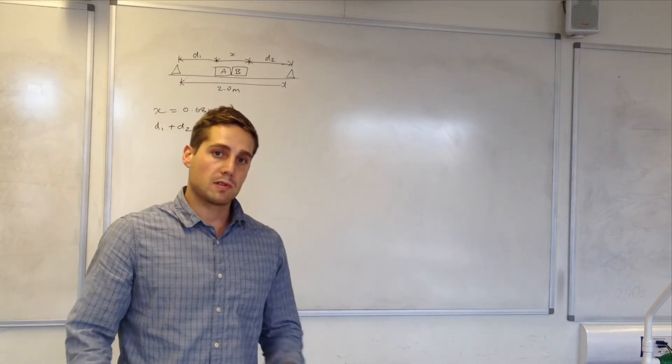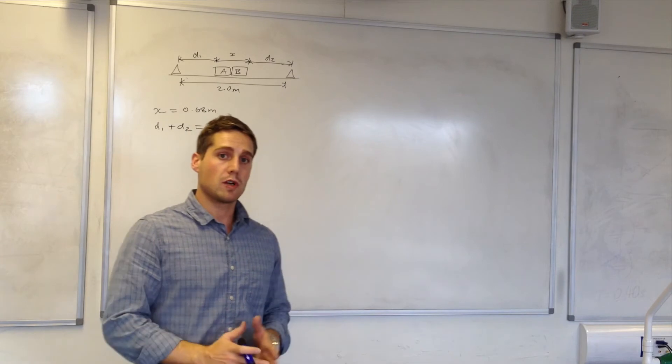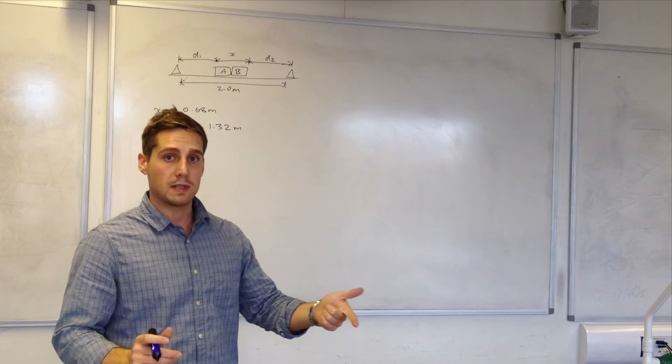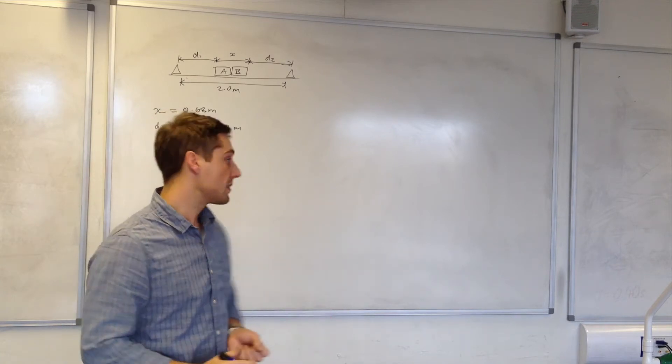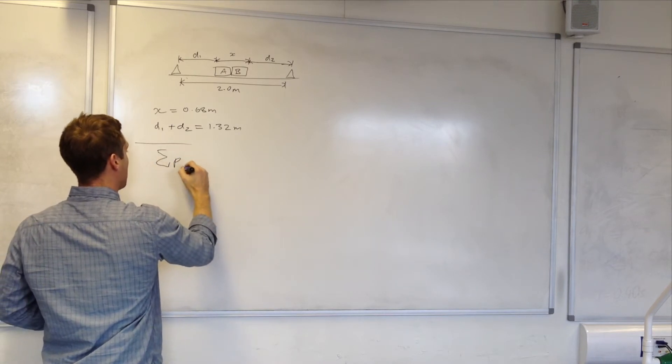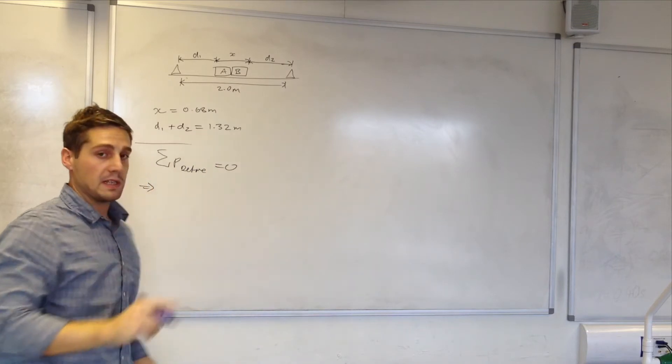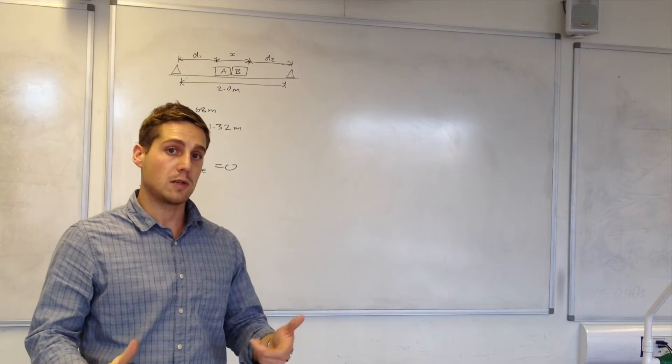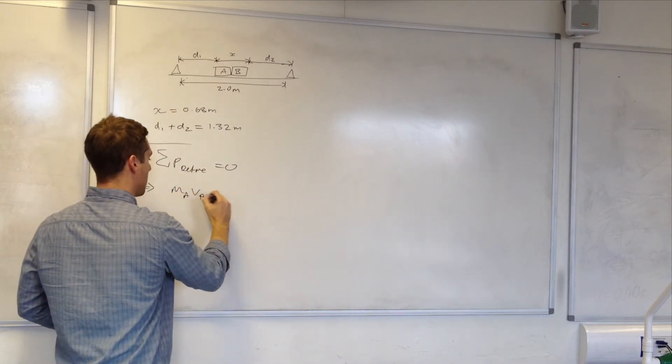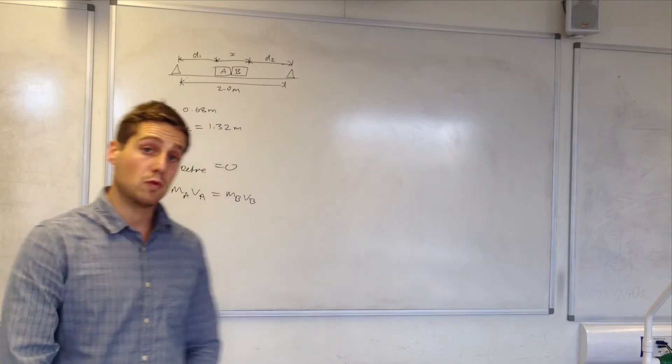I'm now going to apply the principle of conservation of momentum to the problem. Initially, before the plunger is struck, the total momentum of trolley A plus the momentum of trolley B is equal to zero because both trolleys are at rest. So that means that the final momentum of both trolleys is equal, but in the opposite directions.